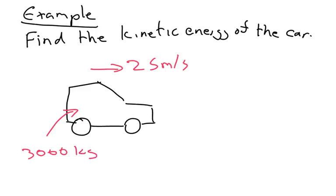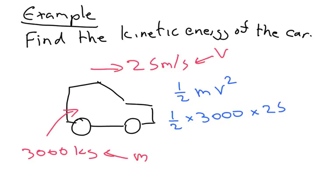So we're going to apply our equation, and our kinetic energy equation is half M V squared. So here we have V, and here we have our mass. So let's put that into our formula. We're going to do a half times M, which is 3,000, times by our velocity squared, so 25, and then times by 25 again.